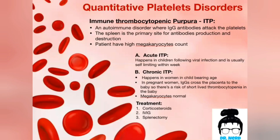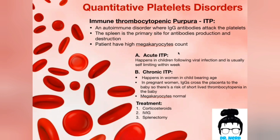Moving on to quantitative platelet disorders — here the count is the issue and the quality is completely fine. The disorder we will discuss is called immune thrombocytopenic purpura, or ITP. It is an autoimmune disorder in which IgG antibodies attack the platelets. The spleen is the primary site for antibody production and destruction, so when antibodies carry the platelets, they go to the spleen to be destroyed. Patients with ITP usually have high megakaryocyte counts because the body senses low platelet count and stimulates production of the precursor megakaryocytes to compensate.